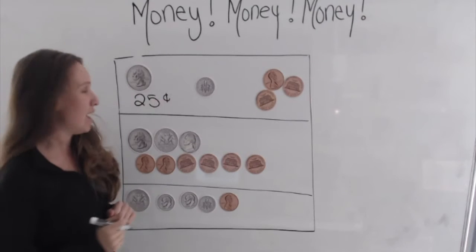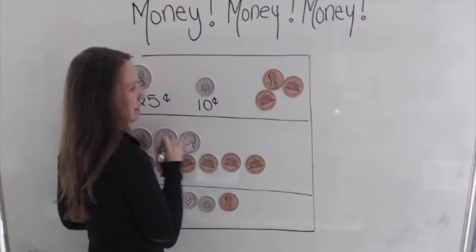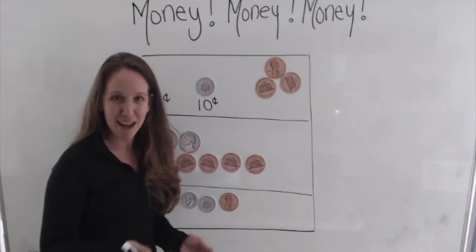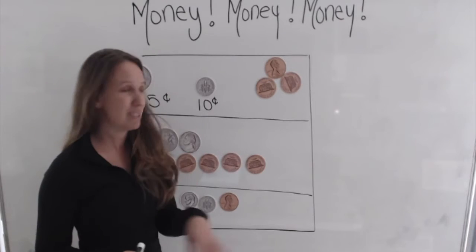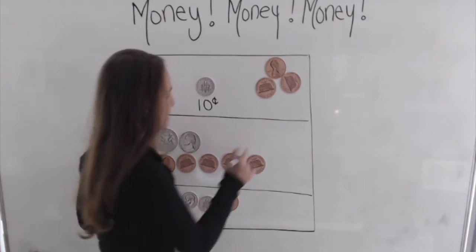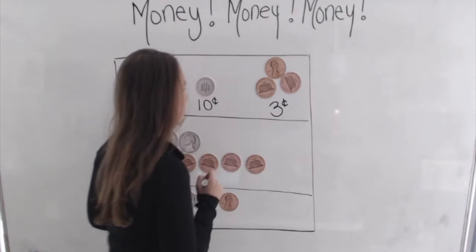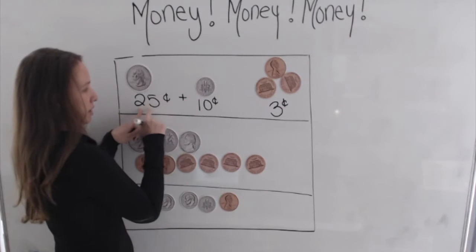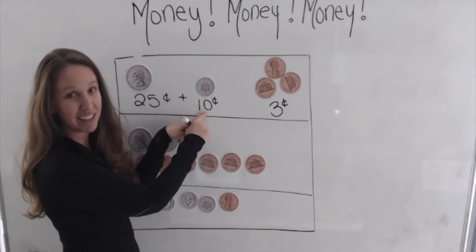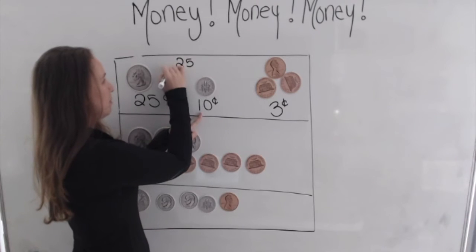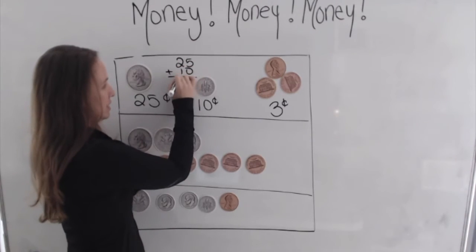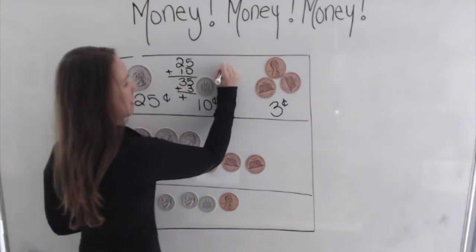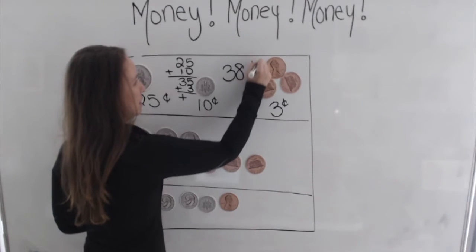And now we're adding one dime, which is 10 cents. And then we're adding three pennies. Well, the great thing about pennies is that since they're each worth one cent, the number that you have is the number of cents we have. And now we're adding them all up together. 25 plus 10 is 35, and three more makes 38 cents.